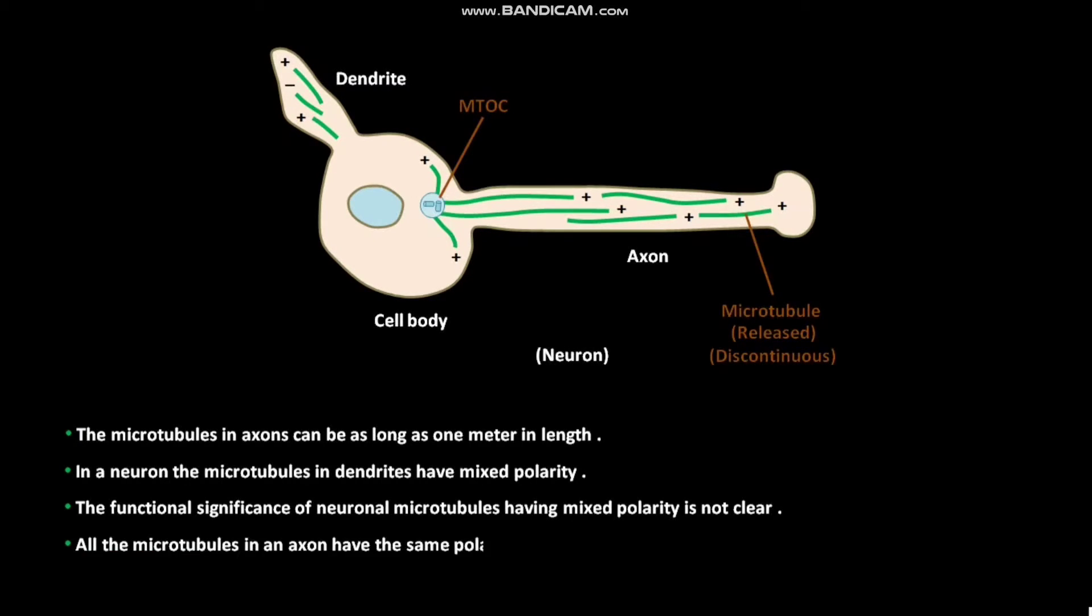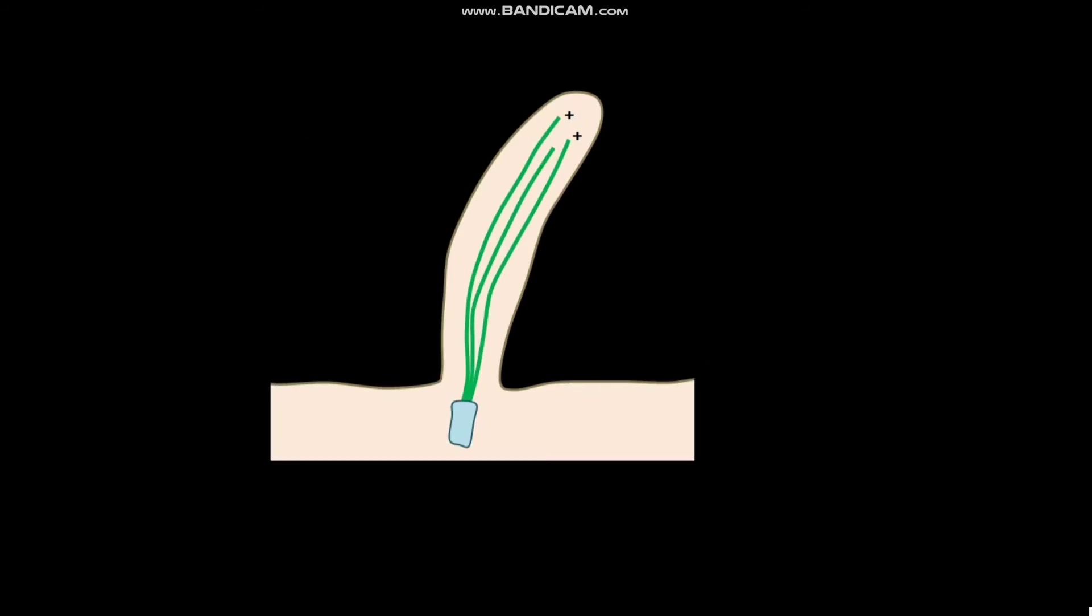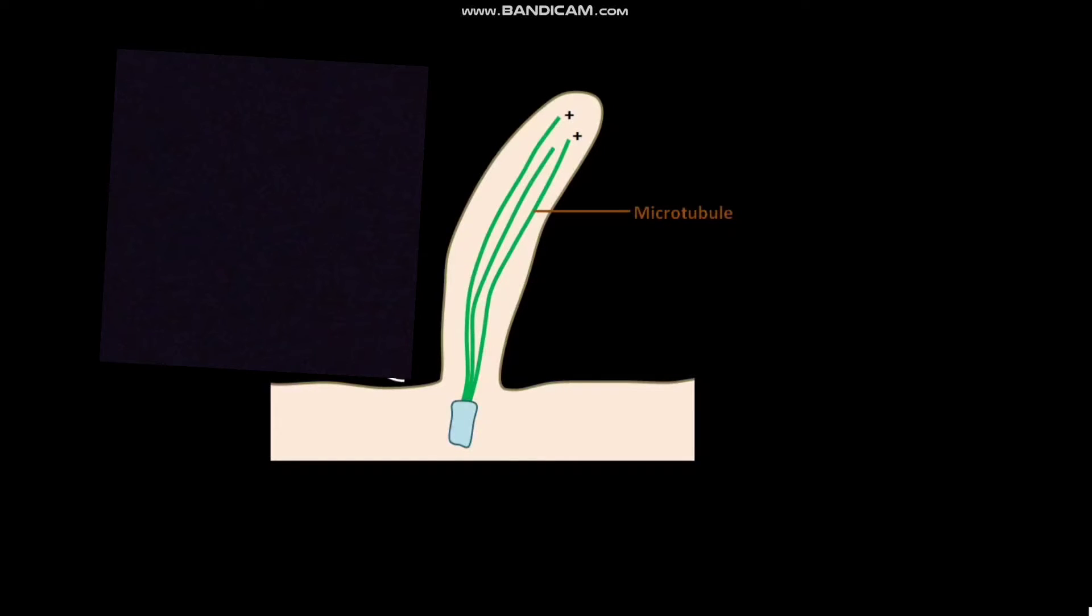All the microtubules in an axon have the same polarity. The microtubules that make up the shaft of a cilium or flagellum are assembled from an MTOC known as the basal body.